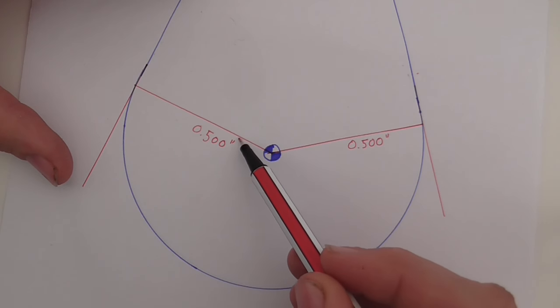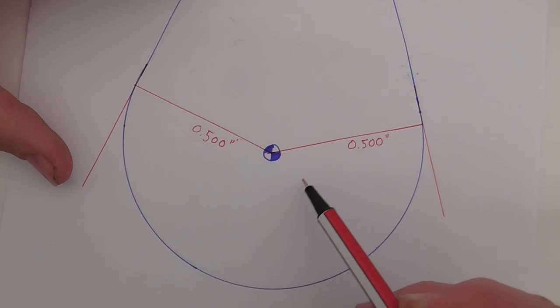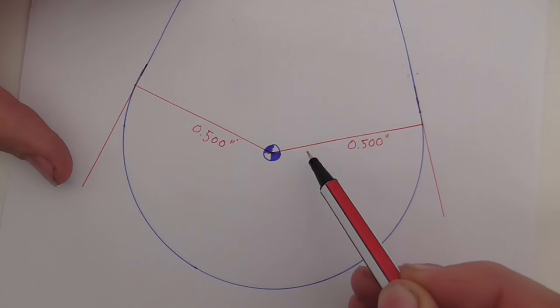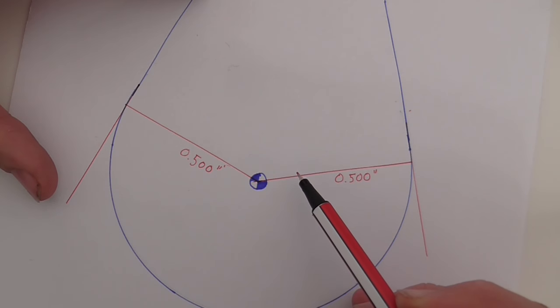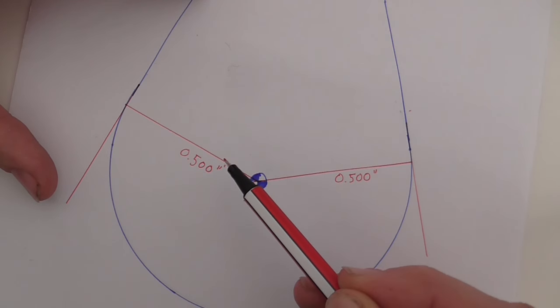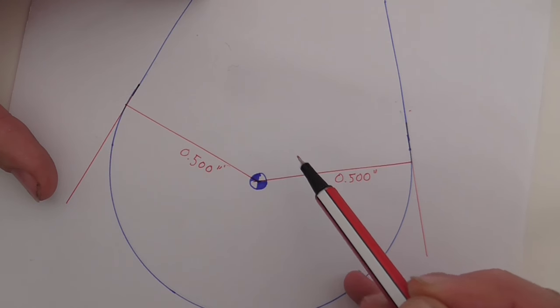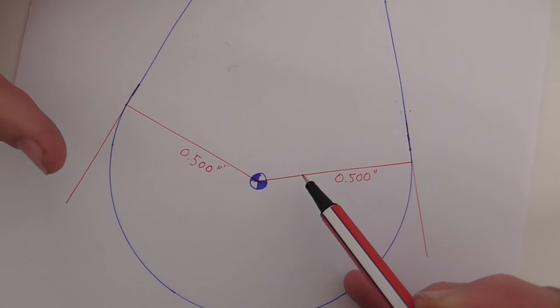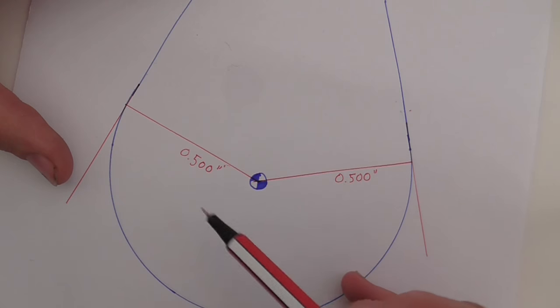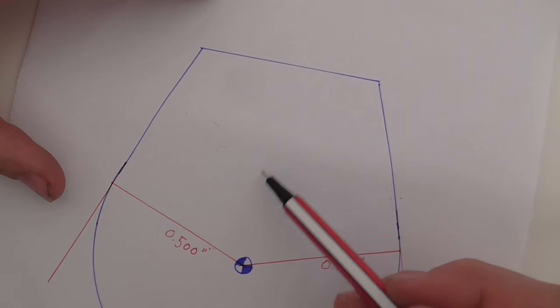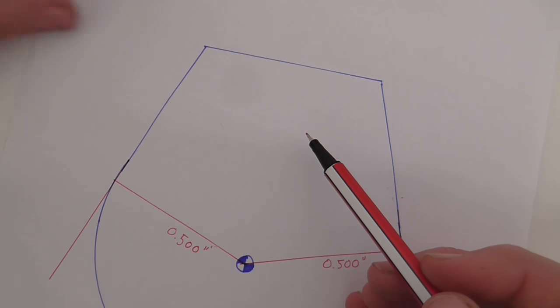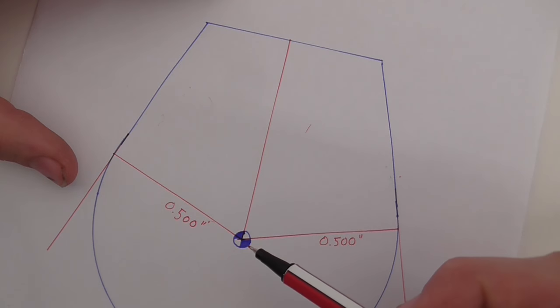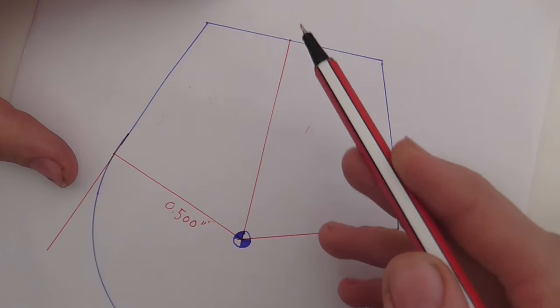And what we want next is the angle that runs all around here. To get that I'm going to have to find out what the angle is on this side. We know that there's 360 degrees in a circle so if I can find out how many degrees go around this side I can subtract that from 360 and it'll tell me what's left.